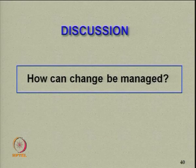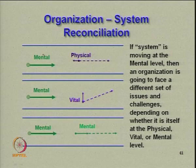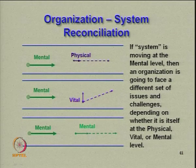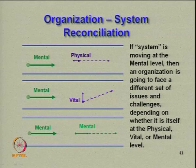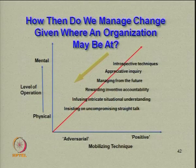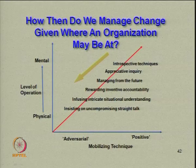Finally, how can change be managed? To manage change, you will have to think about whether you want mental change, vital change, or physical change. If a system is moving at the mental level, the organization faces a different set of issues. Mental change will be needed in knowledge organizations, vital change in organizations that are partly knowledge-based and partly manufacturing-based, and physical change in manufacturing organizations. I then bring you to a final chart which sums up what we have been discussing — how to manage change given where an organization may be.